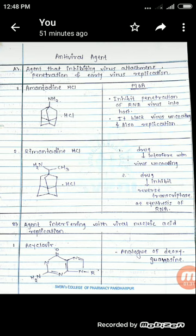Now we are going to see the second category: the agents interfering with the viral nucleic acid replication. The first drug is acyclovir. Acyclovir is an analog of deoxyguanosine, and this is the structure of acyclovir.